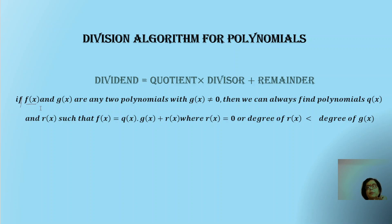The divisor will also be a polynomial, the dividend will also be a polynomial, and obviously the quotient and remainder will be polynomials. So if we have f(x) as a polynomial being divided by g(x), we can write: dividend equals quotient times divisor plus remainder. The remainder r(x) can equal zero, and if it is not zero, then the degree of r(x) will be less than the degree of g(x). We can continue the division process as long as the degree of the remainder does not become less than the degree of the divisor.